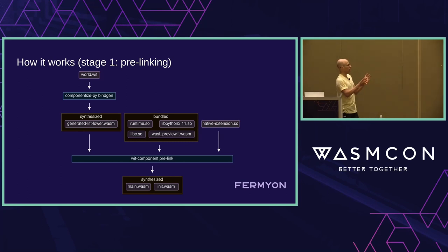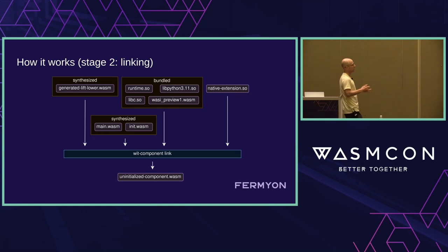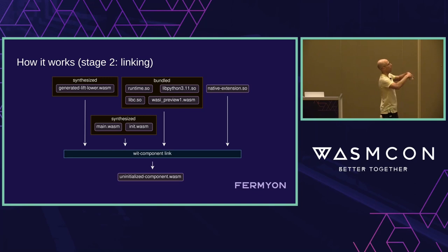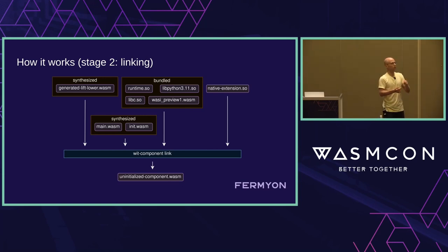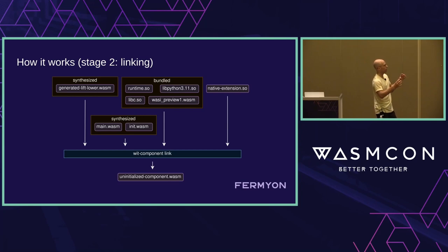Now we have all our core modules — no components yet. The next step is actual linking: we feed all the .so's and .wasm core modules into a WIT component link step that topologically sorts them so modules with fewer dependencies come first, hooking up imports to required exports. In some cases there are cycles, which we break via an indirect function table. The output is what I call the uninitialized component — not quite done yet, but ready to have Python code injected.